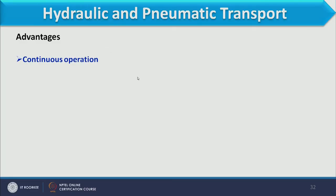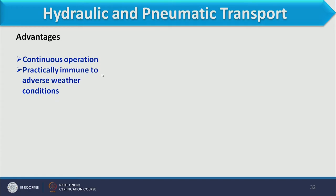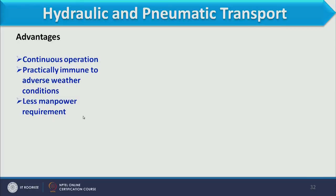Space requirement will not be that high in this case. Advantages of hydraulic as well as pneumatic transport include continuous operation, operation continues for longer time, and practically immune to adverse weather conditions. When transported in the form of slurry inside pipes — whether above or below ground — it is not affected by weather. It has less manpower requirement and possibility of following a relatively shorter route because pipelines can be placed underground.